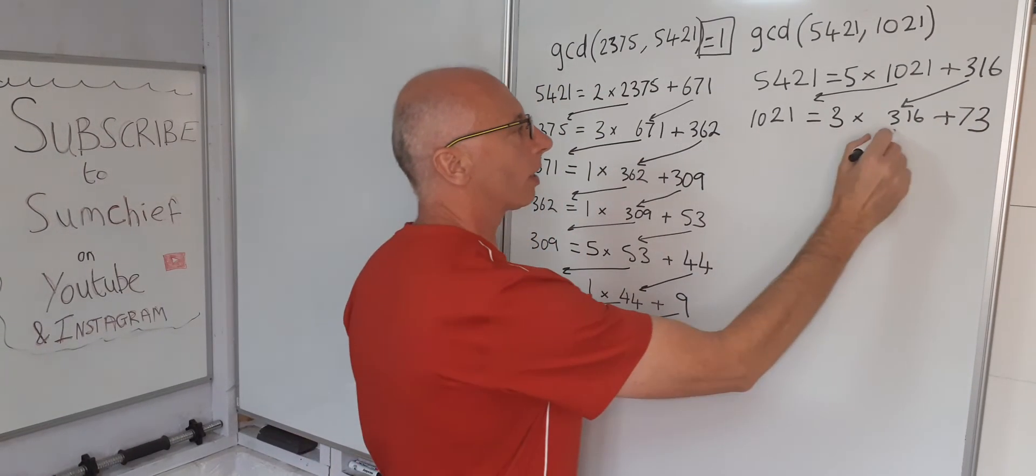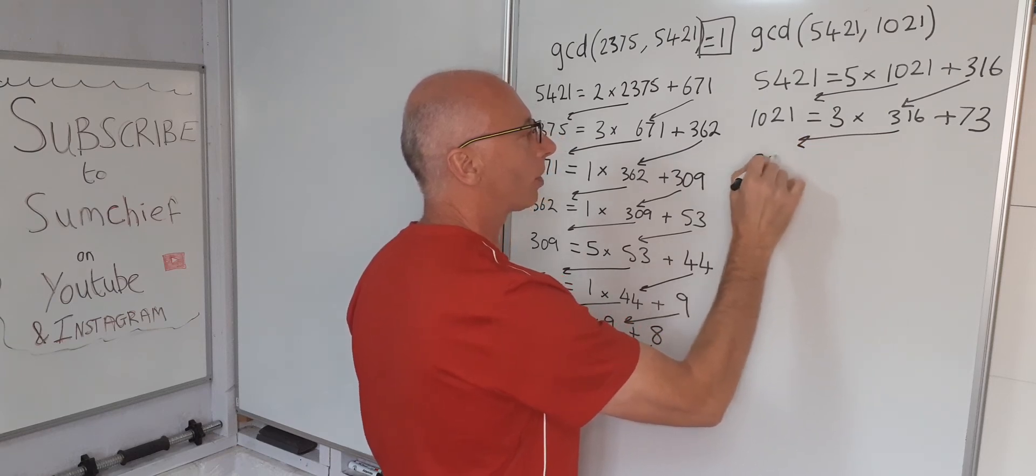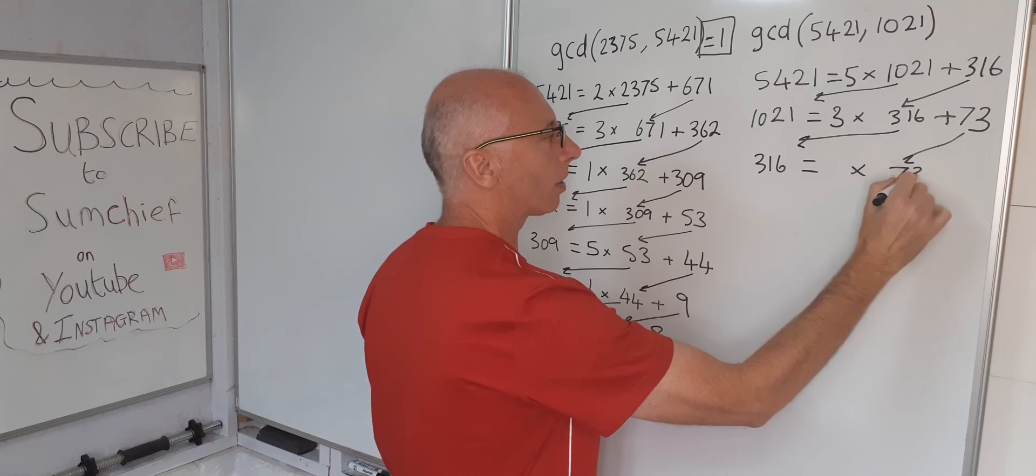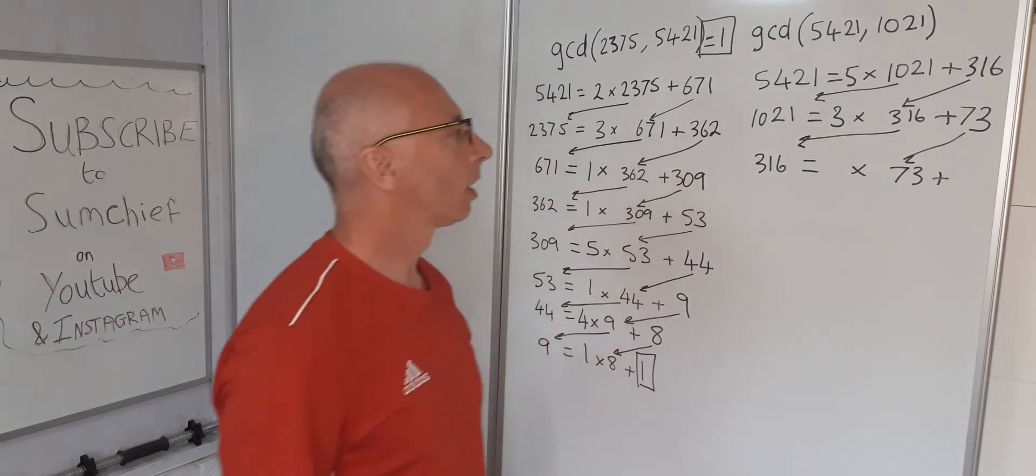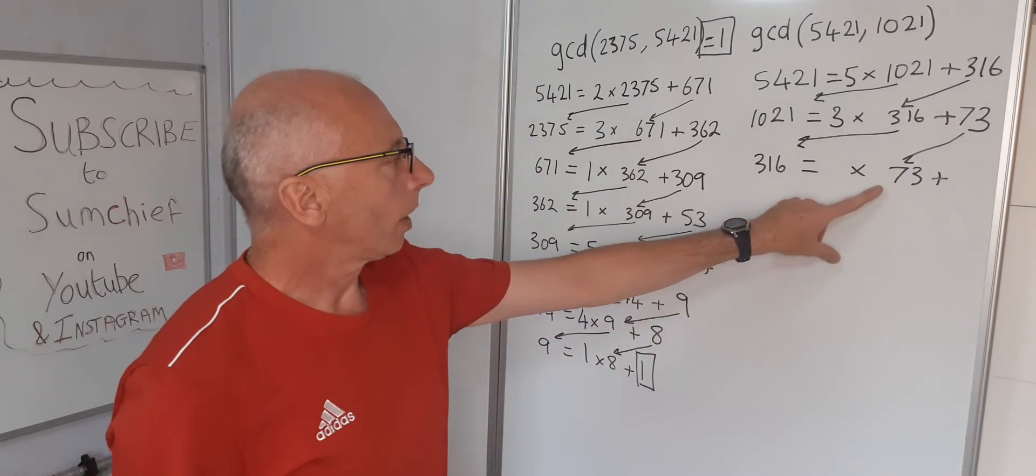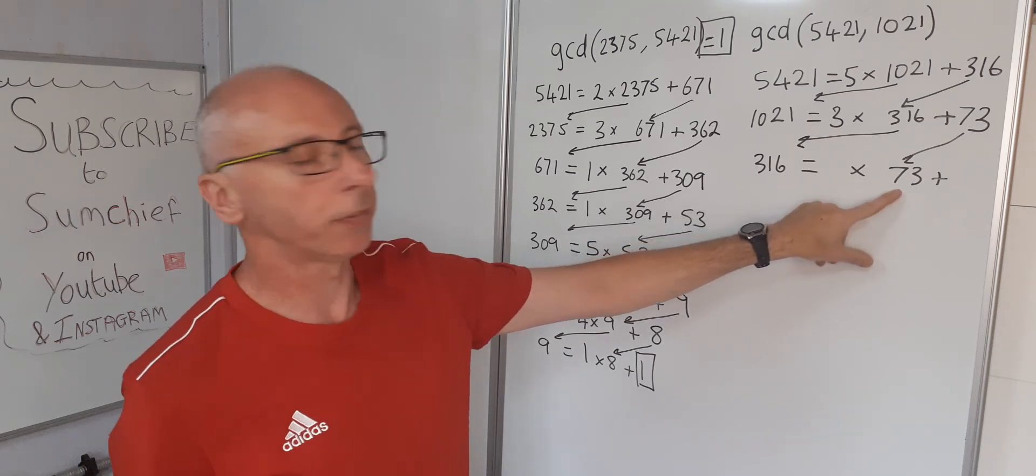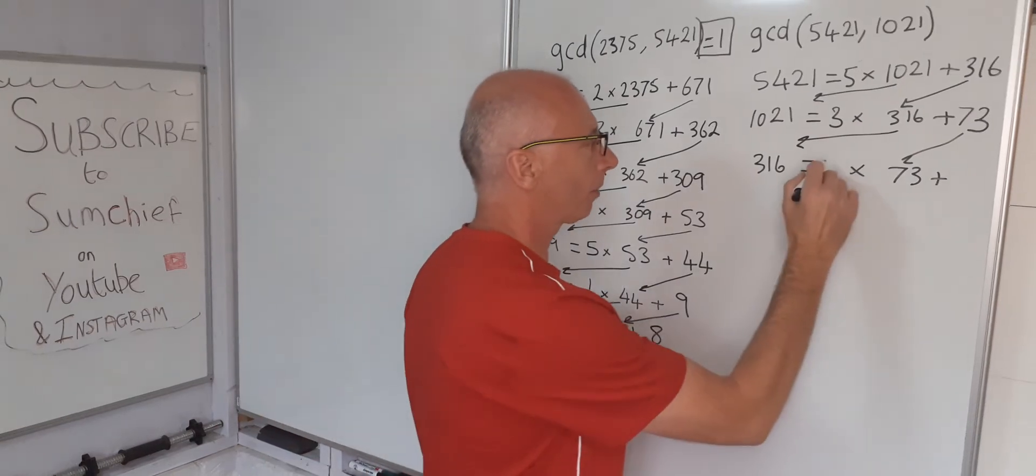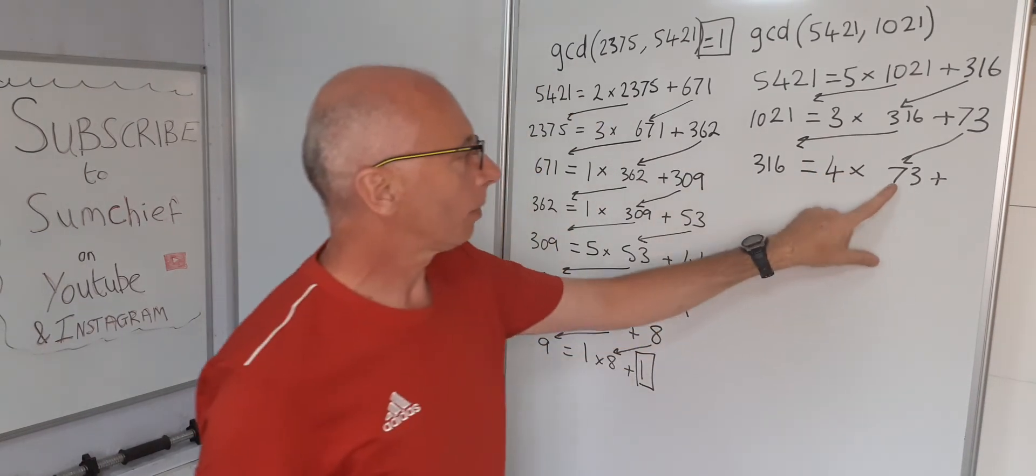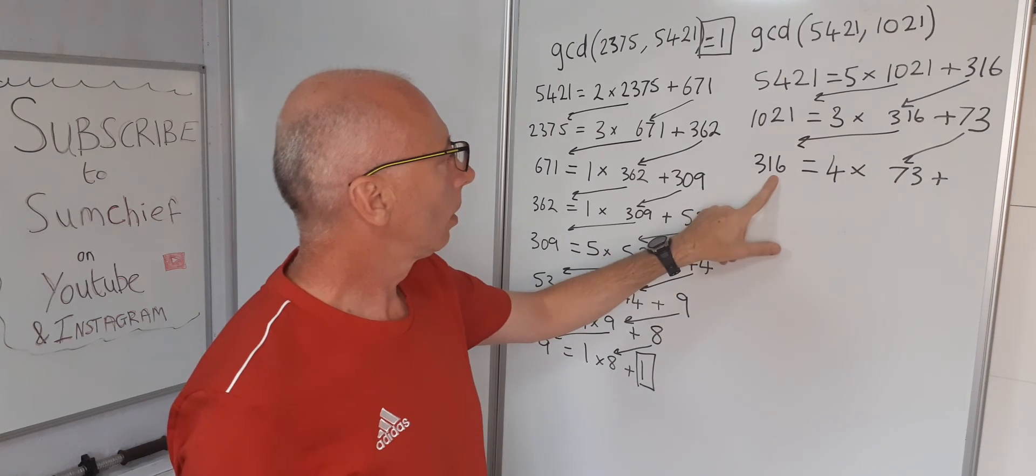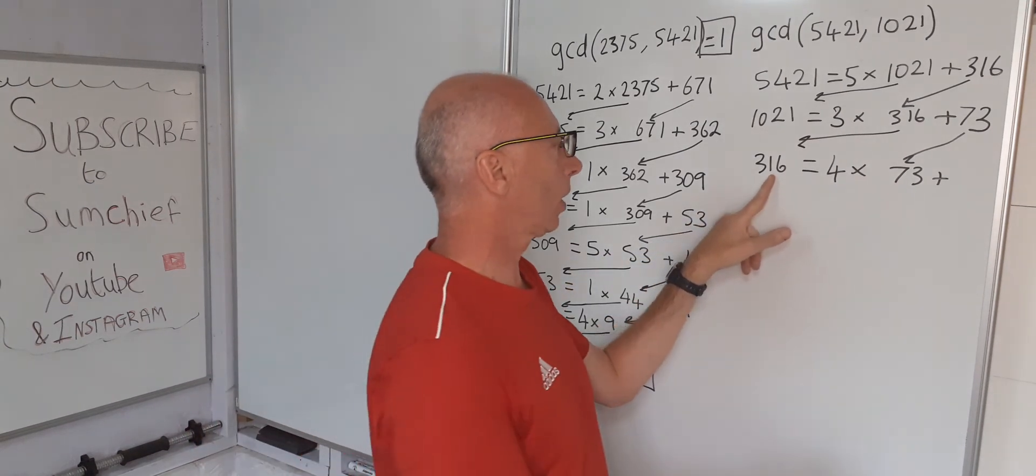Let's continue again. 316 equals something times 73. So 73 times 5 is going to be too many, so it's going to be a 4. So 4 times 73. 73 times 4 is 292. Take that off there, that's going to give us 24. So again, this is still a true statement.